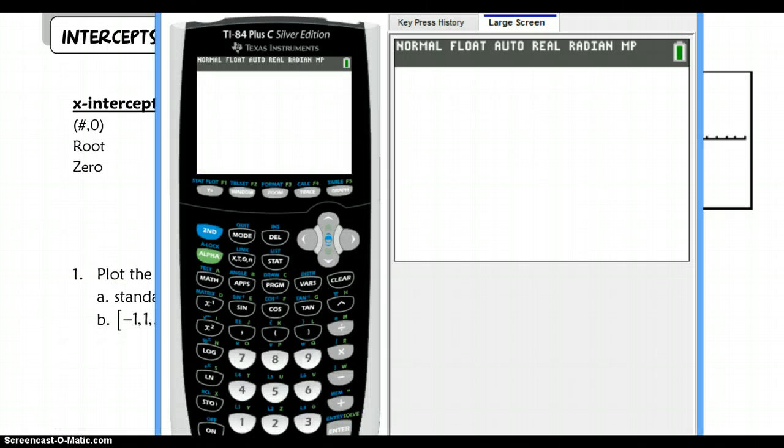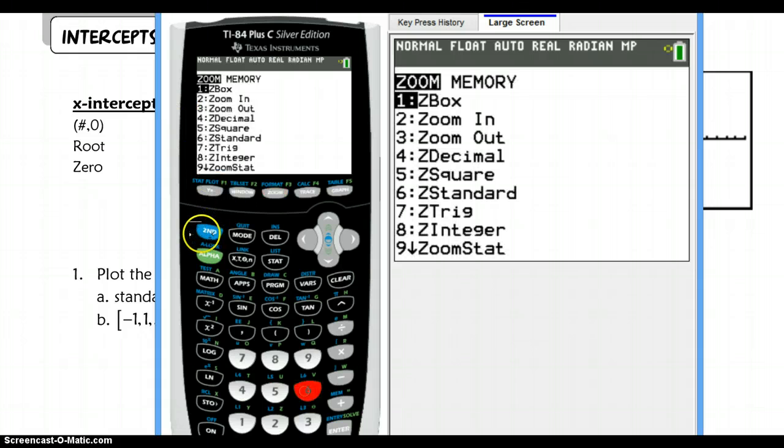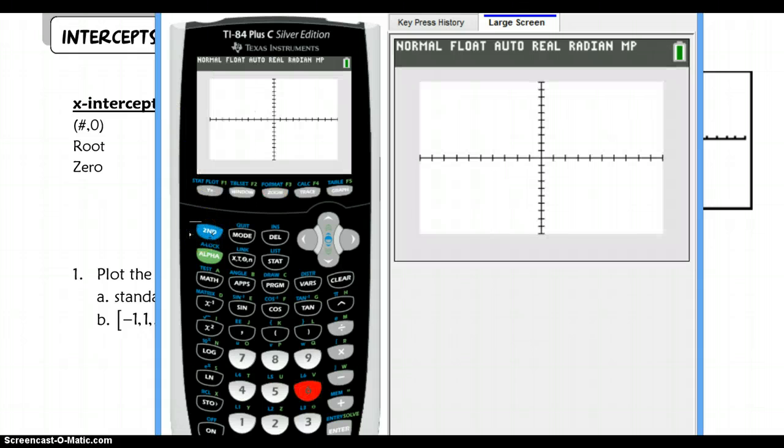So here is a calculator. I just want to show you. You're going to hit zoom and then 6, and that will bring up your standard viewing window. You can see here that for both x and y-axis, our scale is from negative 10 to 10, and each tick mark represents a unit of 1.